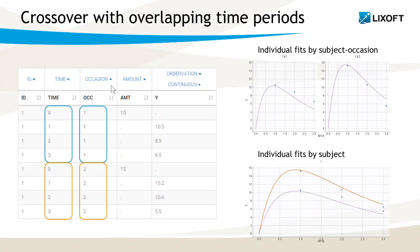In Monolix, the predictions for each occasion will be independent and it will be possible to display them in the individual fits separately, like on the top, or on the same plot as on the bottom, with different colors for independent occasions.